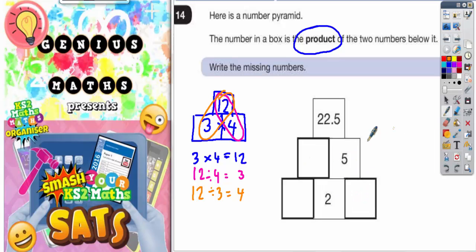So if you start with the number on top, which is 5, and divide it by 2, you'll get whatever goes here. 5 divided by 2 - well, half of 5 is 2.5, so that must be 2.5. And if you think about it, the product of 2 and 2.5 would be 5, because 2 times 2.5 equals 5.